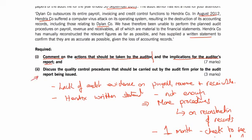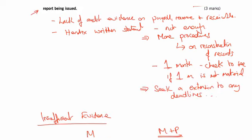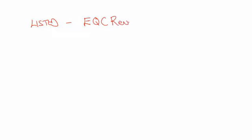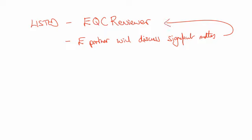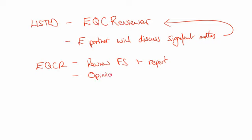Part two says: discuss the quality control procedures that should be carried out prior to issuing the report. Now, if you are a listed company, in terms of quality control, you need an Engagement Quality Control Review, and you need to appoint an Engagement Quality Reviewer. What will happen is the engagement partner — the person doing the audit — will discuss any significant matters with the Engagement Quality Control Reviewer before giving their opinion. The reviewer will also review the financial statements and the audit report that we are suggesting, looking to see whether the opinion is appropriate.